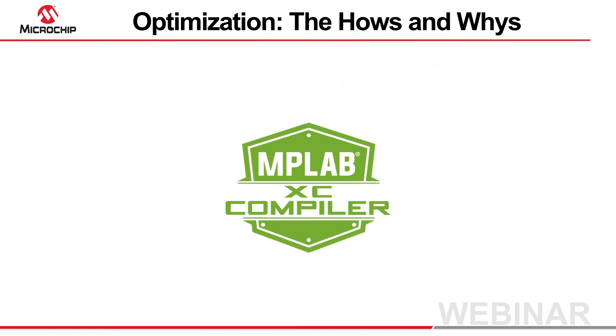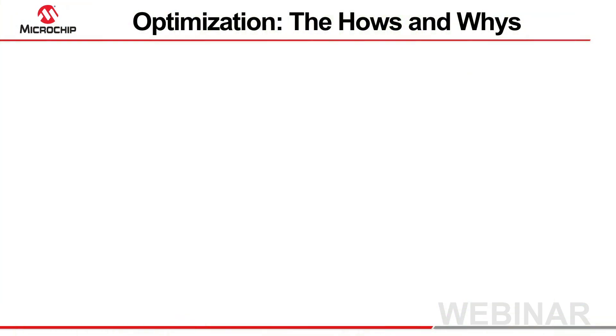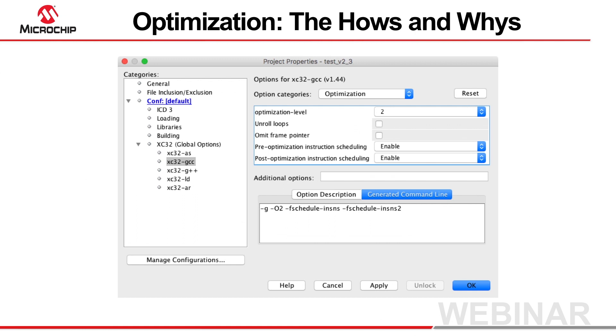Controls allow optimizers to be enabled, but why are optimizations needed at all? Why not just produce the most optimal code, first time, every time?